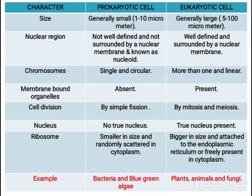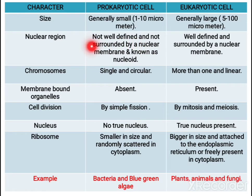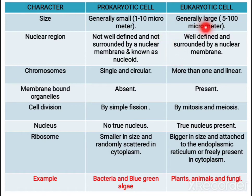Now let us study prokaryotic and eukaryotic cells. On the basis of different characters: in terms of size, prokaryotic cells are small and eukaryotic cells are large. The main difference between prokaryotic and eukaryotic cells is regarding the nucleus. In prokaryotic cells, there is no well-defined nucleus — nuclear membrane is absent. The region where chromosomes lie is called the nucleoid. In eukaryotic cells, there is a well-defined nuclear membrane and the nucleus can be clearly seen.